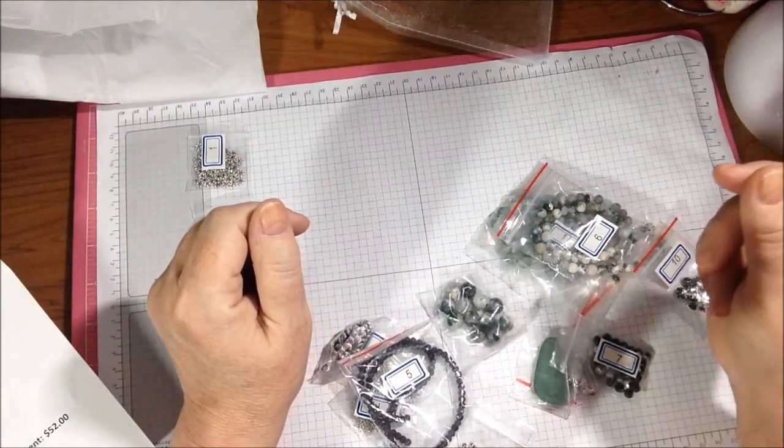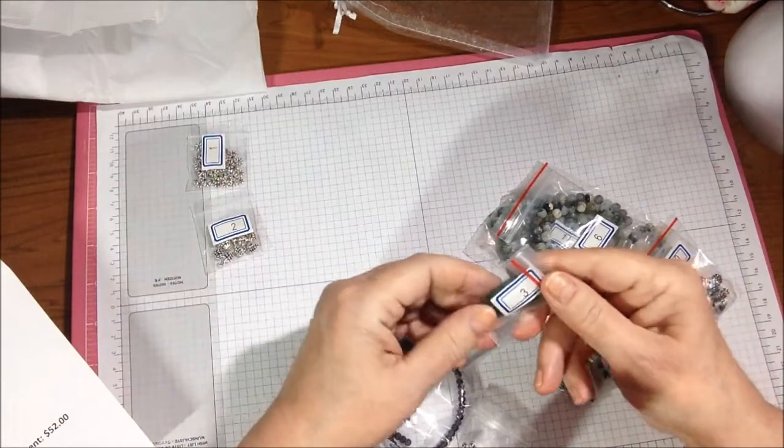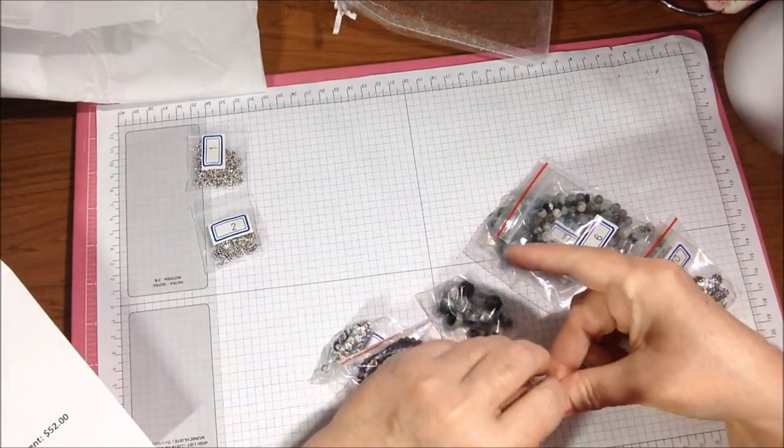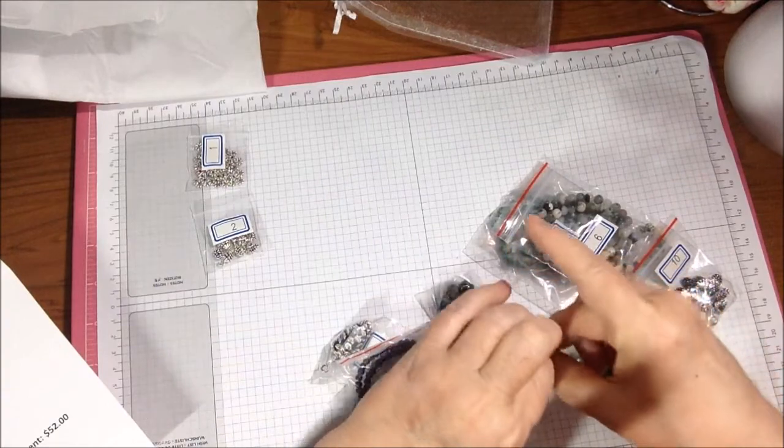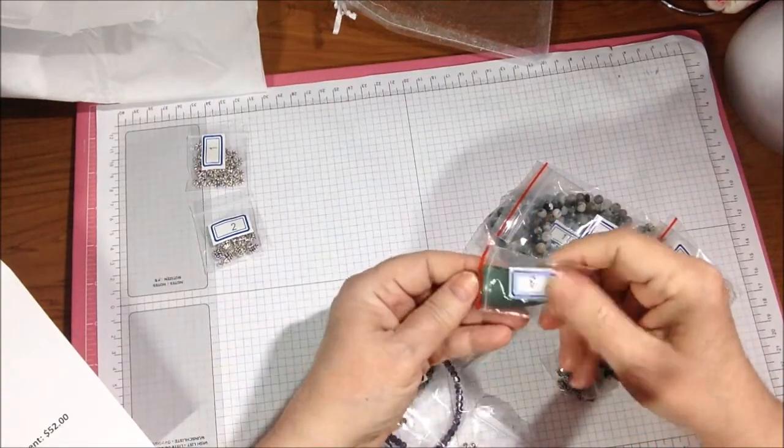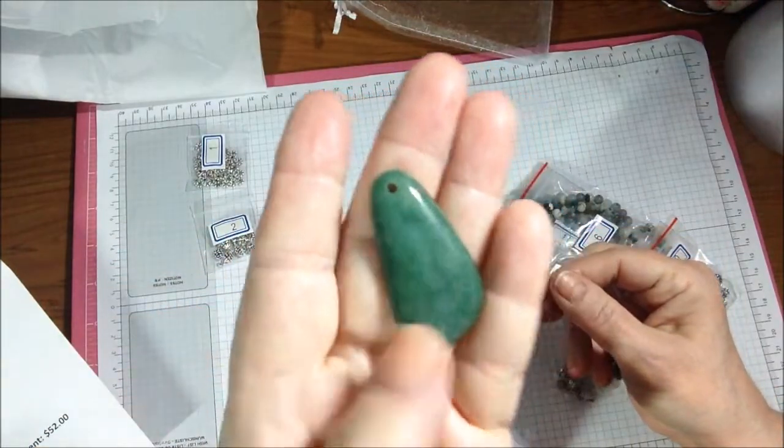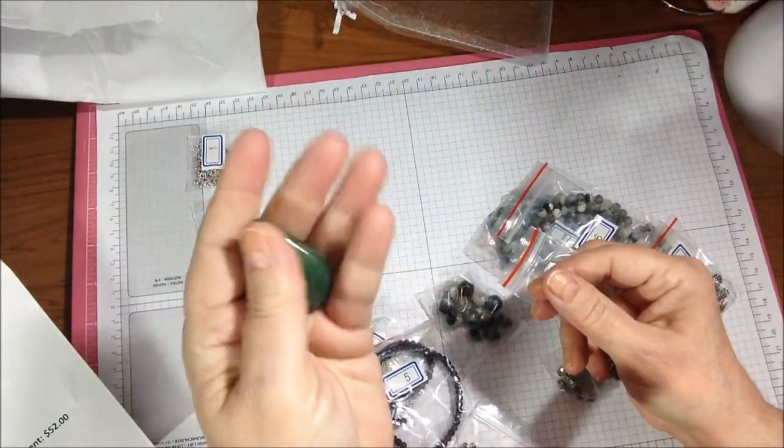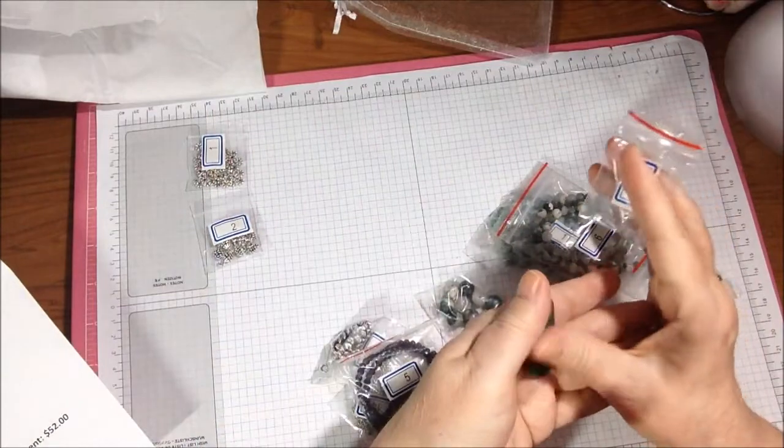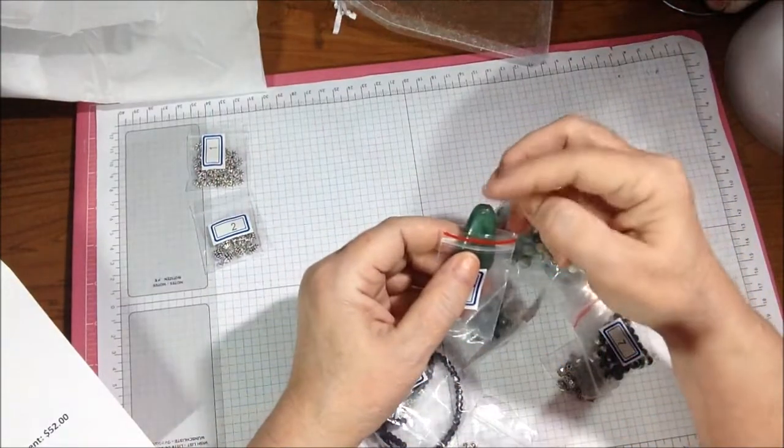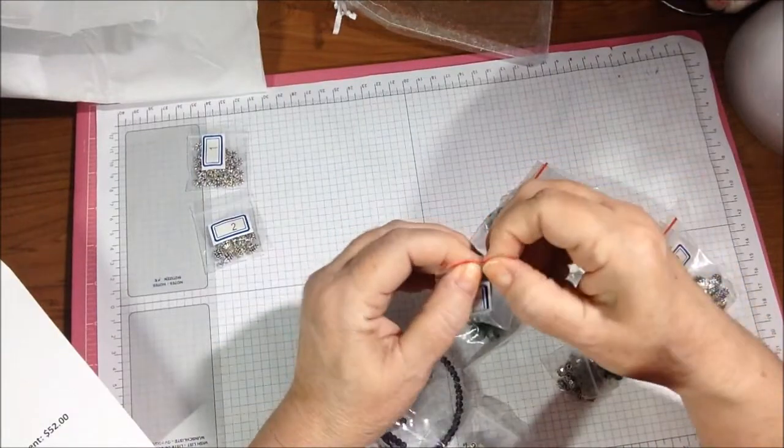Then I have one piece, 41 millimeter serpentine jade - in quotes jade because not jade, jade color - gemstone pendant. So this is serpentine, it's really pretty, love it. It's in good shape too, it's a nice piece. Flat on the back, and it has a hole to just use it as a pendant or you could wire wrap it.